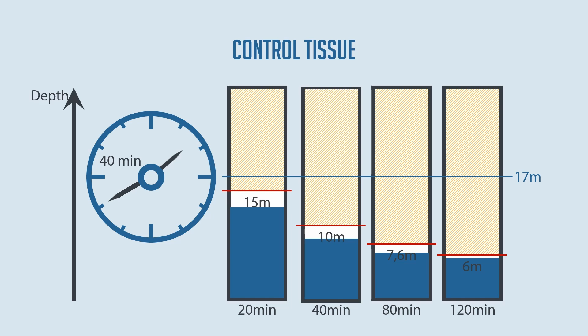The compartments fill up as follows: the 20-minute compartment goes through exactly two half-saturation times and therefore reaches 75% of the target pressure. The 40-minute compartment runs through one half-saturation time, so 50% of the ambient pressure is present in this tissue. The 80 and 120-minute compartments do not undergo a complete half-saturation time; however, due to the non-linear behavior, the reality is always higher. Please note that these representations are only of a qualitative nature.